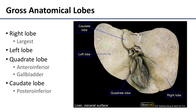These lobes are different than the eight functional divisions, which are based on the distribution of the portal venous branches in the parenchyma. Those particular segments are not going to be visible in an intact view of the liver — just these four gross anatomical lobes.